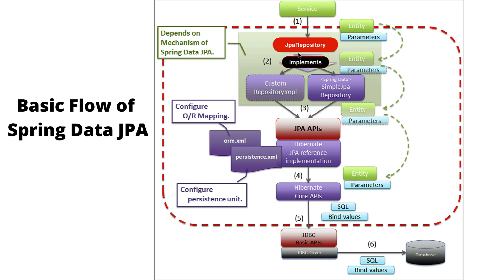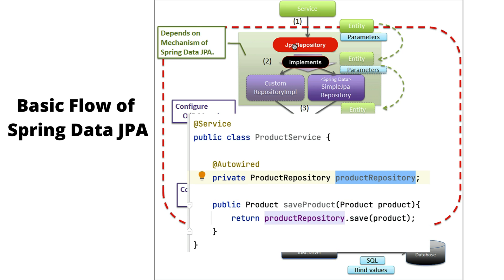We basically call JPA repository methods from the service layer. For example, if we want to save an entity into the database table using Spring Data JPA, what we do is inject the repository — that is, JPA Repository — in the service layer, and then call its save method, passing the entity as a parameter. This is the first step.